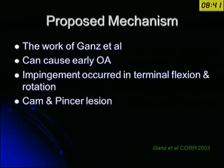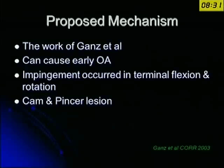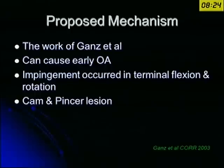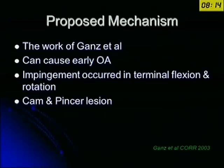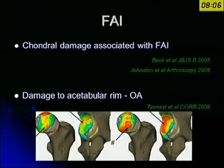This mechanism of impingement has been greatly studied by the Gantz group from Switzerland. They have done tremendous work on more than 600 cases of hip dislocation, trying to correct these impingement mechanisms. They noticed that the hip with this impingement can lead on to early osteoarthritis, and most of this impingement occurs when the hip goes into terminal flexion and rotation. They coined the terms the cam and the pincer lesions in the hip.